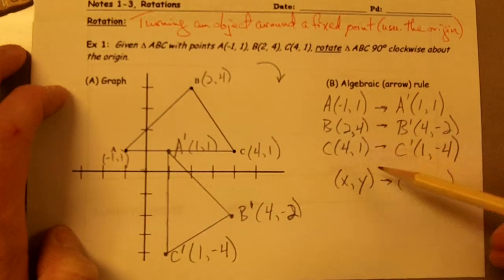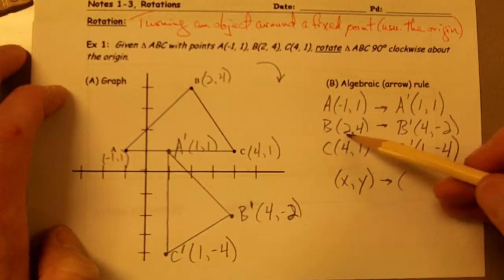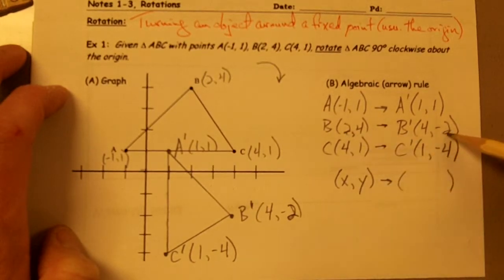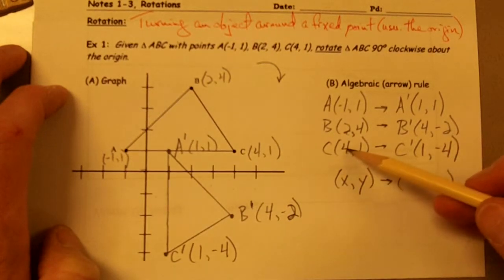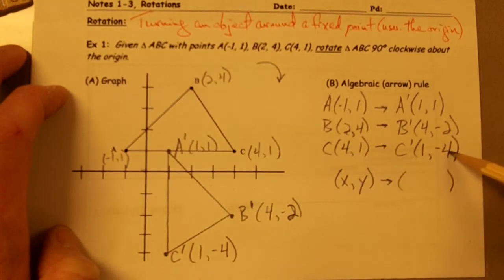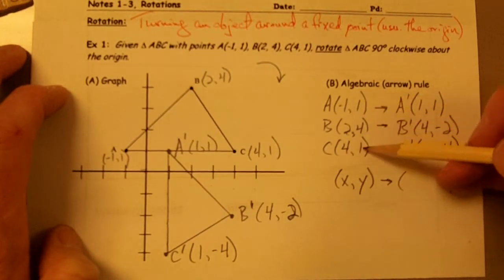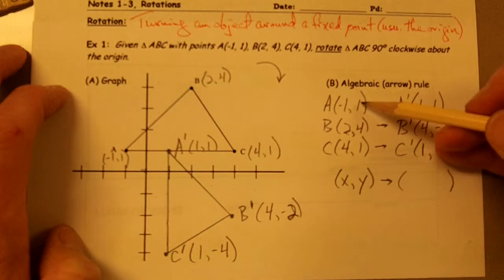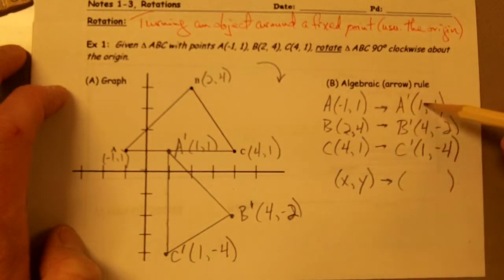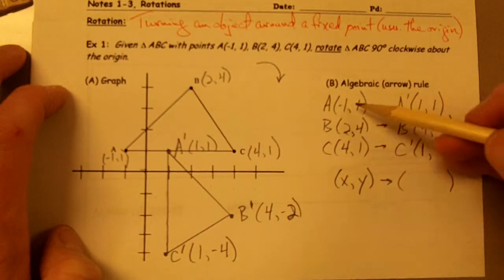In other words, this value right here for B, my original X value for B was 2, and it moves over to the Y value for B prime and becomes a negative. Same thing for this one. That 4 moves over to the Y position and becomes a negative. For my original Y values, it looks like they just swapped over to the X position, and that was all they did.